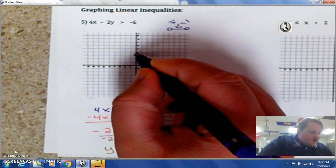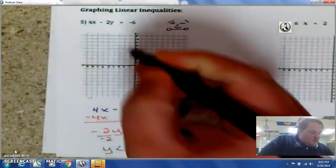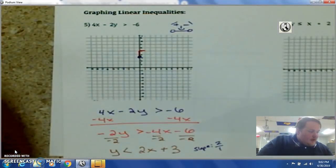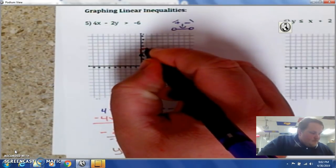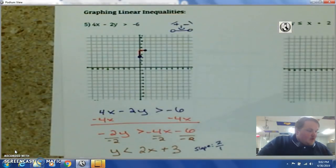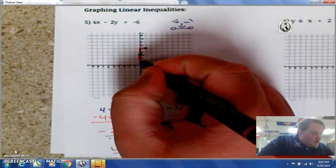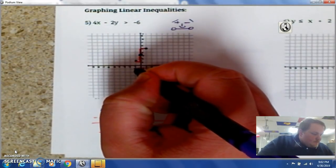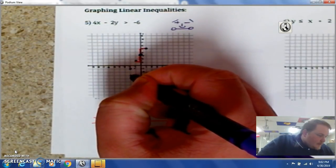So, I go up 2. Up 2. Over 1. Plot a point. Or, I could go down 2. Over 1. Plot a point. And I just continue filling that out.